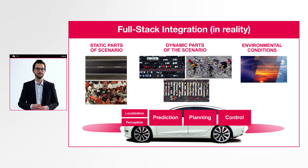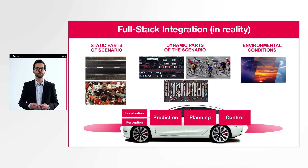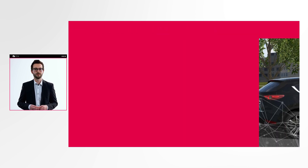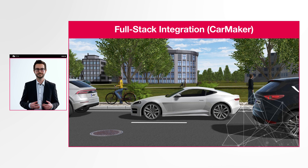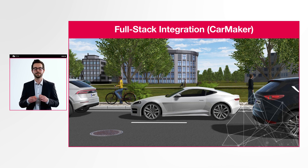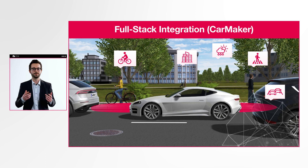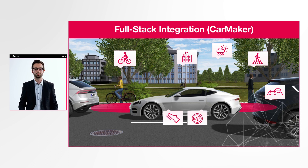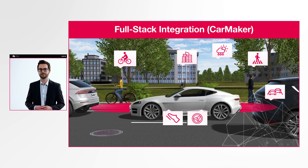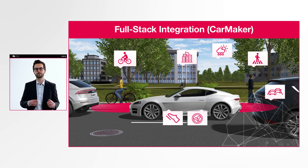When we want to test the AV software early in the development, we can leverage simulation. All we need to do is to replace everything around the system under test with models — the environment, the sensors, the vehicle and the actuators. CarMaker brings all of that to the table, so we just need to focus on getting the sensor data into the system and the control values into the vehicle model.